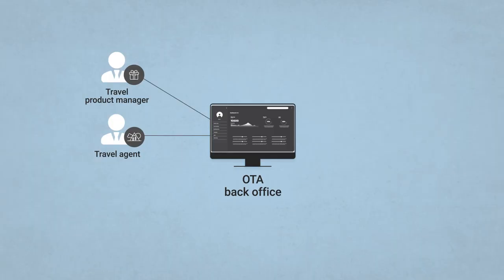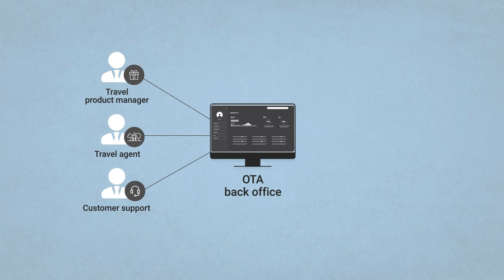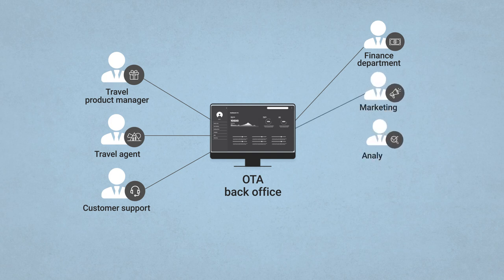You'd also meet travel agents. Despite the idea that OTAs are automatic, you still need people responsible for the booking process and travelers themselves. In some larger OTAs, there will be a group of customer support workers. But more on that later. These three groups are the core staff that operate back office systems. But let's not forget that travel agencies have finance departments, marketing, analytics, product development teams.